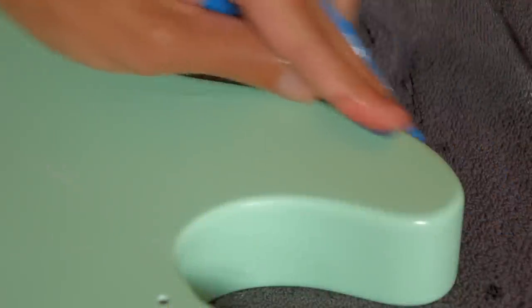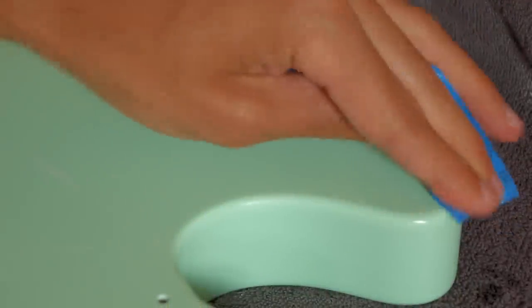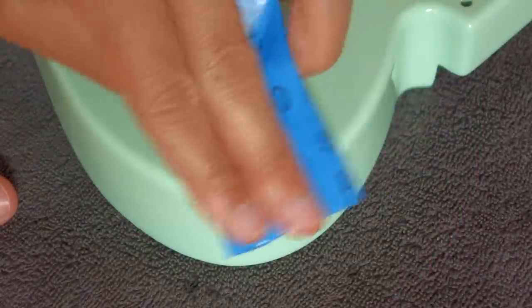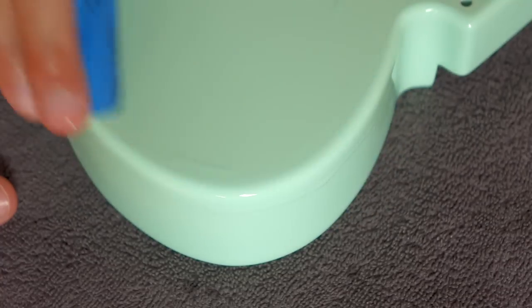Things to look out for while sanding are any roundovers and sharp edges. The nitro will usually be a little bit thinner in those areas and it is very easy to sand through. So take away only as much material as absolutely necessary and don't apply too much pressure.